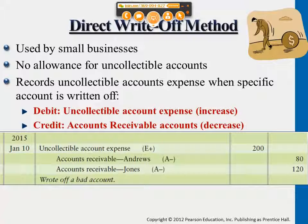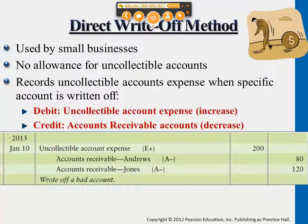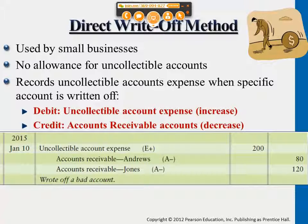There's a matching principle violation here because the uncollectible account expense should have been identified last year — it relates to last year's sales revenue or service revenue, but we only wait until it's past due to identify it. There's also accounts receivable overstatement for last year. Under the allowance method, if we estimate uncollectible expense up front for Andrews and Jones accounts, even though it's bad debt, the uncollectible expense will be recognized in 2014 instead of 2015. But under direct write-off, they don't do this estimation — they just recognize it as it happens. It doesn't align with the conservatism principle or the matching principle.